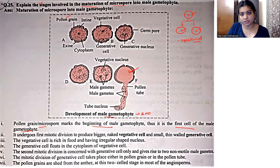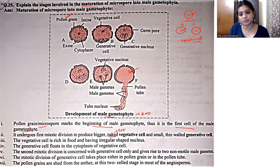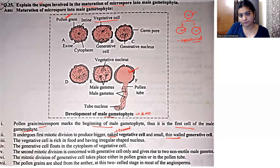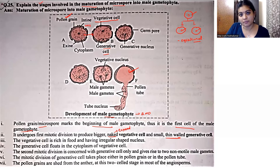यहाँ पे जो पहला mitotic division है, वो pollen grain या microspore कर रहा है. So, pollen grain या microspore आगे जाके दो cells में divide होंगे — जिसमें जो बड़ा वाला है, the bigger and the naked (naked का मतलब है जो exposed है) — वो vegetative cell है, and smaller and thin-walled generative cell में divide होगा.